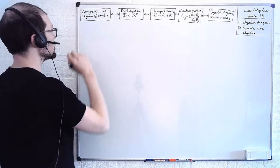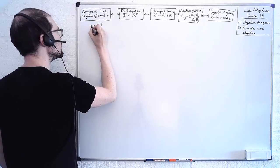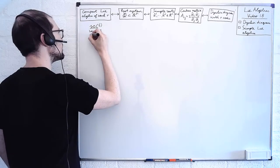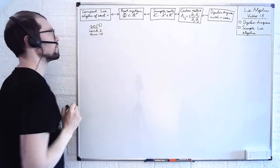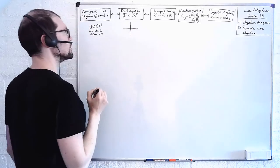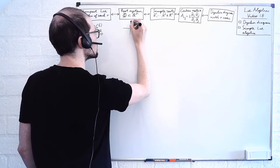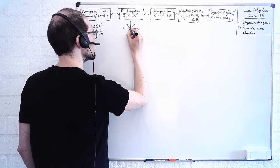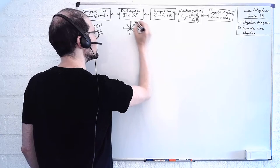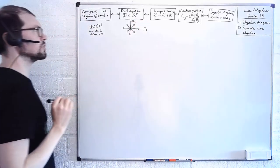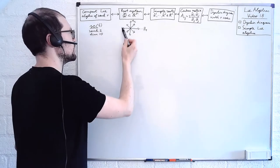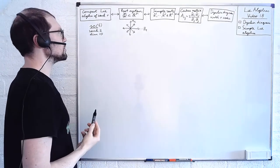So let's give an example. Let's look at SO(5). If you remember, this has rank 2 and dimension 10. Its root system we looked at two weeks ago — it looks like this. So we have a total of eight roots. By definition, these live in the two-dimensional plane, corresponding to the eigenvalues of the two Cartan generators H1 and H2, such that we have a total of 10 generators, corresponding to the dimension of this Lie algebra.